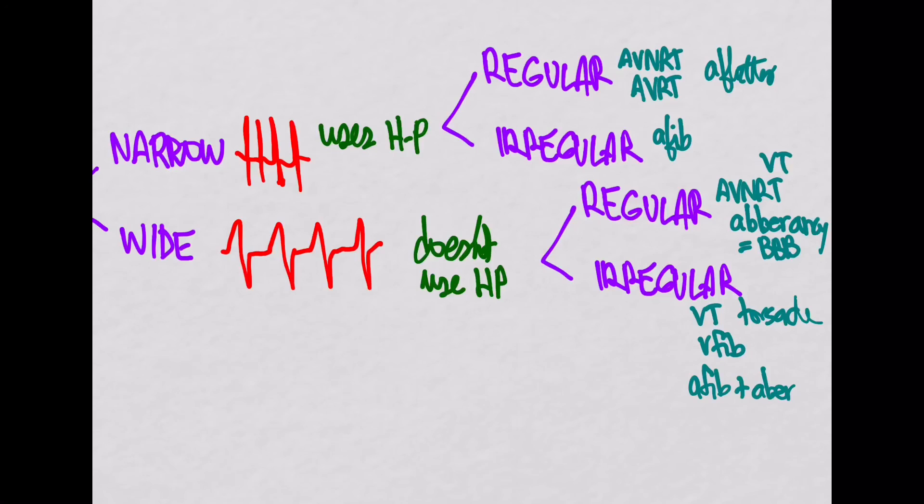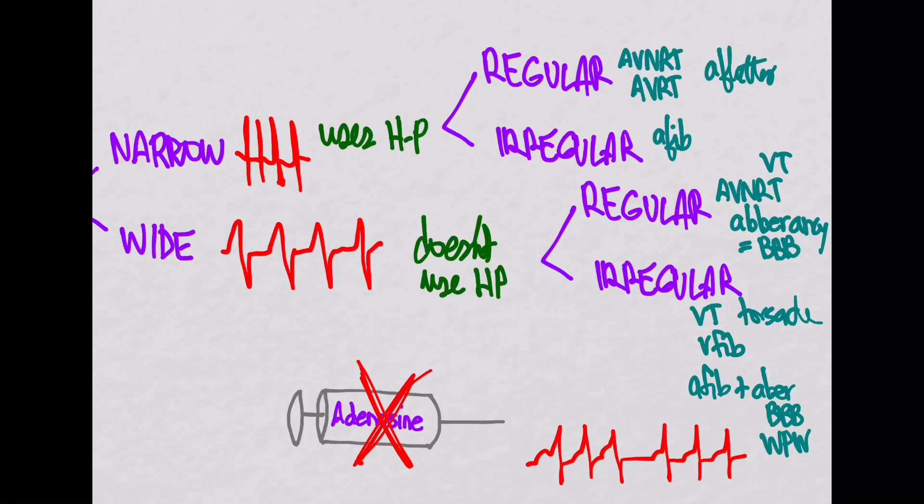Remember, any time you see a wide complex that's irregular, you've got to start worrying about this WPW in there. And then we know that if we give adenosine in this case, bad things can happen, so we don't want to.